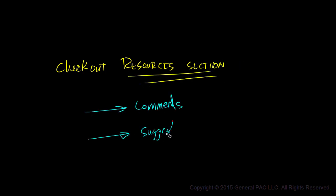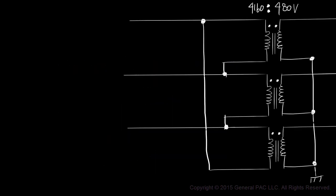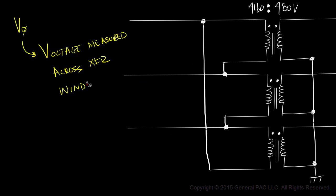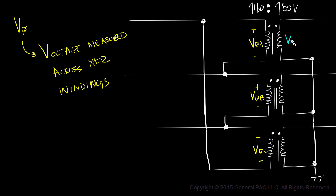Check out the resources section under this video for helpful comments, suggestions, and clarifications. We understand that phase voltages are voltages measured across transformer windings. Let's illustrate primary phase A voltage, measured across the polarity side of winding A and the non-polarity side of winding A. Similarly, we'll illustrate primary phase B voltage, primary phase C voltage, and on the secondary side, secondary phase A, B, and C voltages.